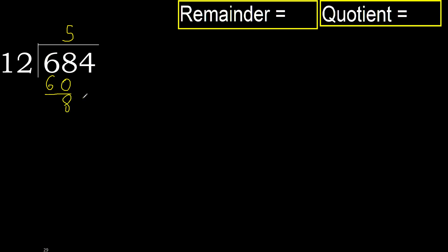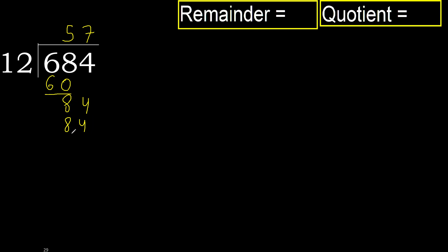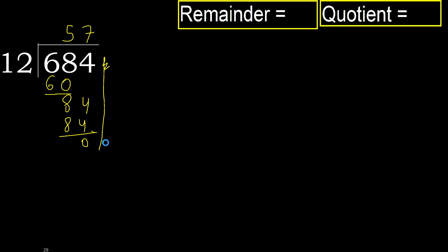Next. 84. 12 multiplied by 7 is 84, is not greater. Subtract. Next, there is no number, therefore finish it.